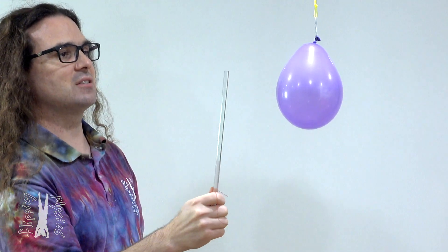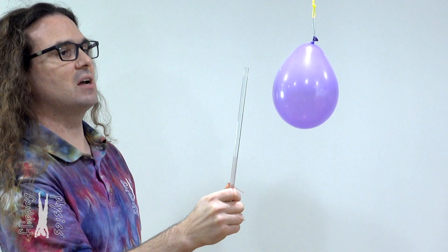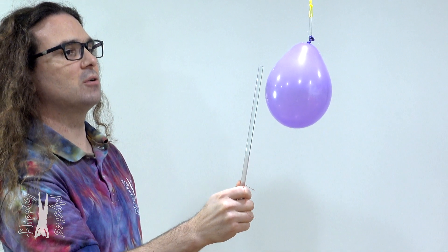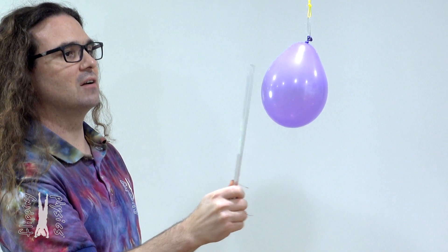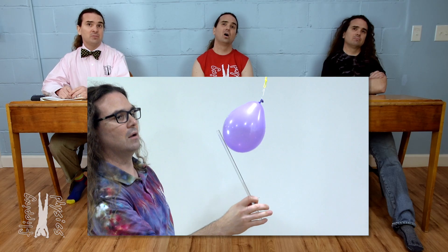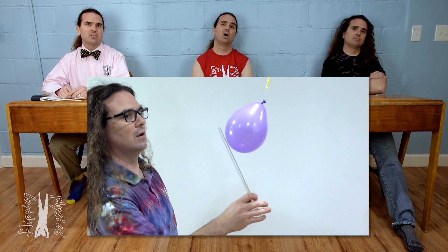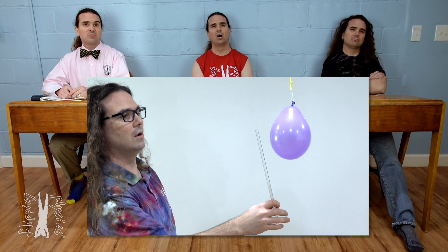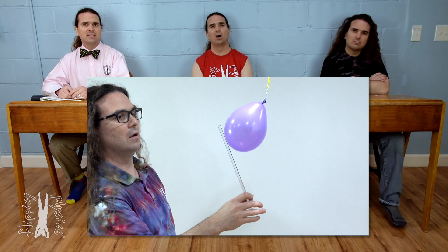Now, if instead I take a piece of glass and rub it against silk, we are going to get a different behavior. The glass rod is rubbed against silk and I bring it close to the balloon — what happens is the glass rod and the balloon are pulled toward one another. The rubber balloon and rubber rod repel one another, but the rubber balloon and glass rod are attracted to one another.